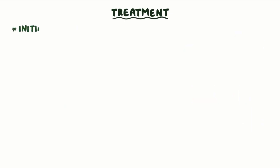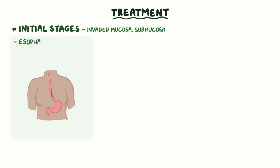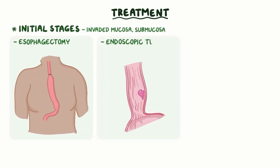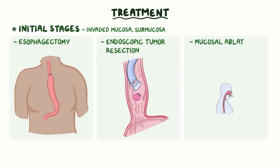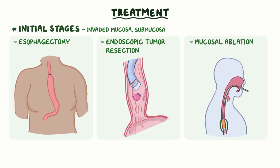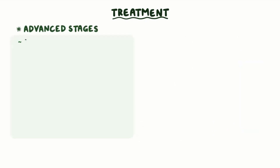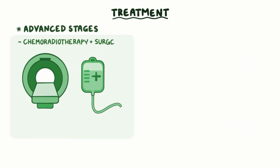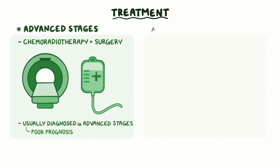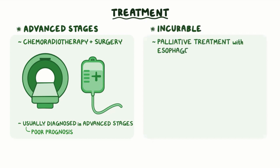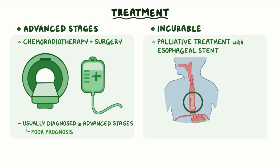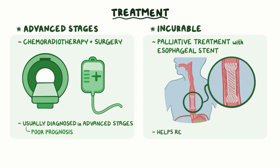Treatment depends on the stage. For initial stages, when the cancer has invaded just the mucosa and submucosa, options include esophagectomy, endoscopic tumor resection, or mucosal ablation, which is when the cancerous mucosa is removed by radiofrequency. For more advanced stages, chemoradiotherapy is used in combination with surgery. Unfortunately, esophageal cancer is usually diagnosed in advanced stages, so it's considered a poor prognosis cancer. When the cancer is incurable, palliative treatment with an esophageal stent — a tiny tube placed inside the esophagus to keep it dilated — usually helps reduce dysphagia.